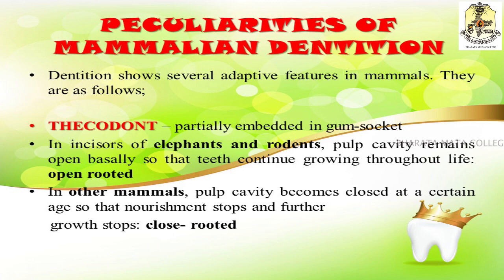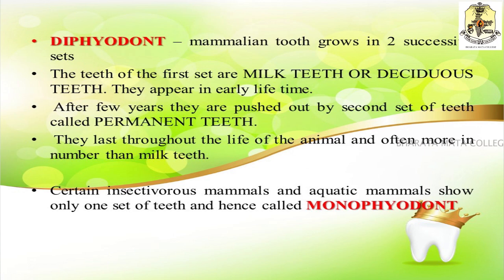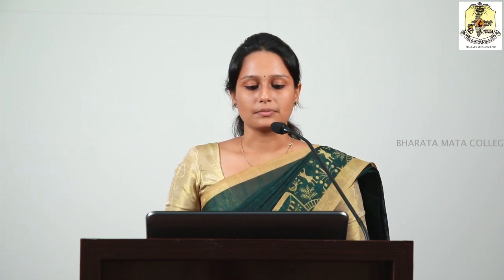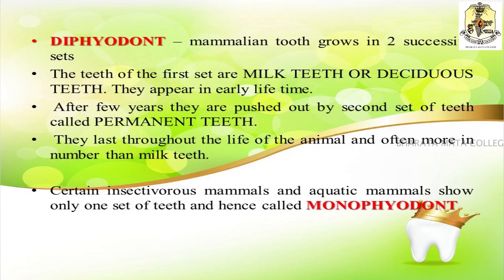Diphyodont dentition means most mammals have two successive sets of teeth. The first set is known as milk teeth or deciduous teeth, which appear early in life. After a few years, these milk teeth shed off and are replaced by permanent teeth which last throughout life, and the number of permanent teeth is often greater than that of the milk teeth. In certain insectivorous animals and aquatic mammals, they show only one set of teeth and are known as monophyodont.